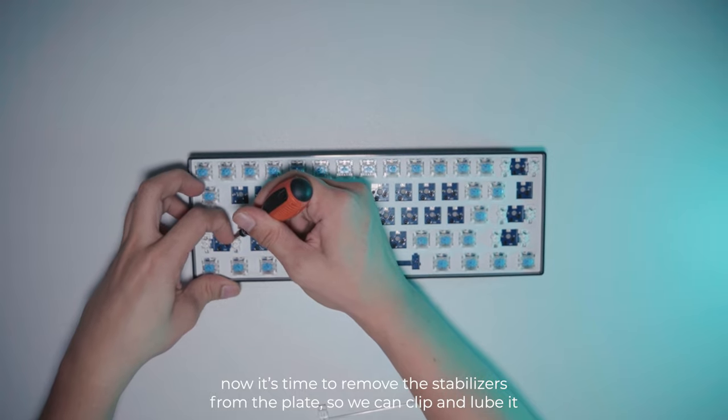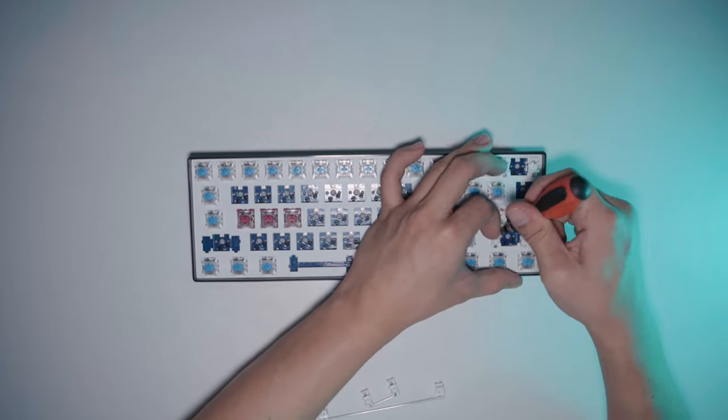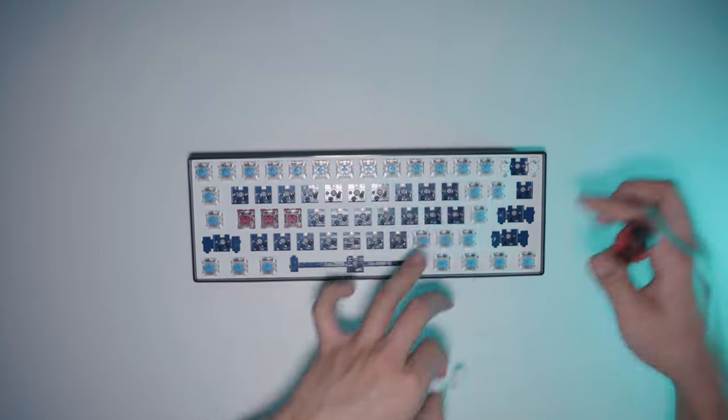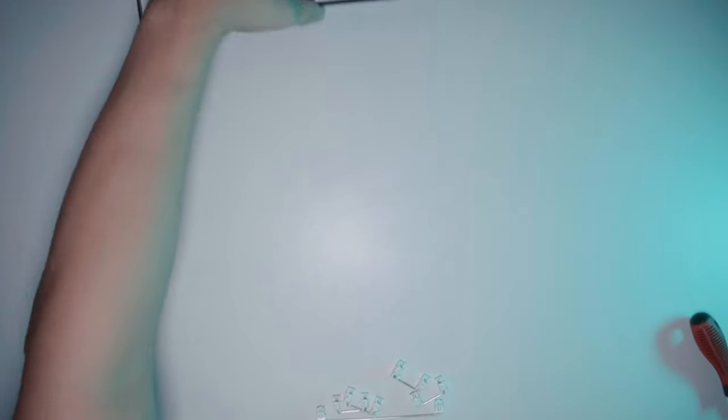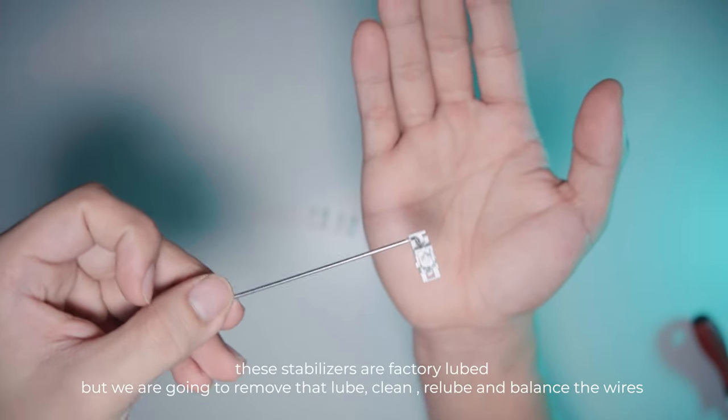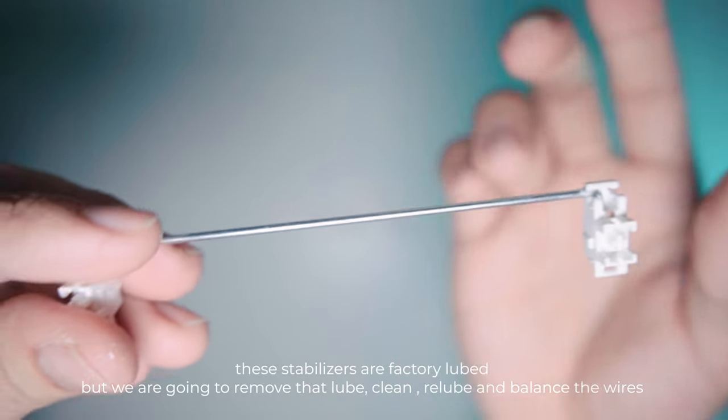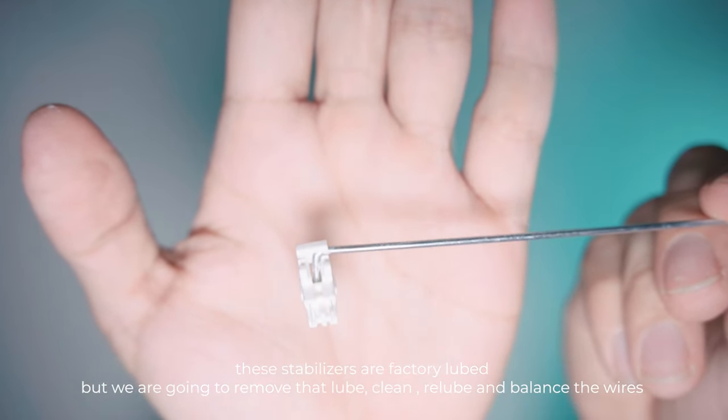And this is our third mod, where we lube and clip the stabilizers. The stabilizers themselves are factory lubed, but it seems that it is not lubed well. We will remove the previous lube and add a new one. For the stem to housing, we are going to use Krytox 205 grade 0 and Permatex dielectric grease for the stabilizer wire.